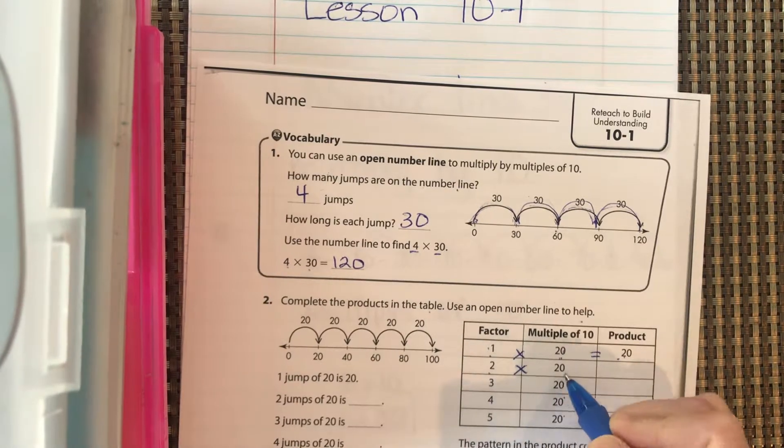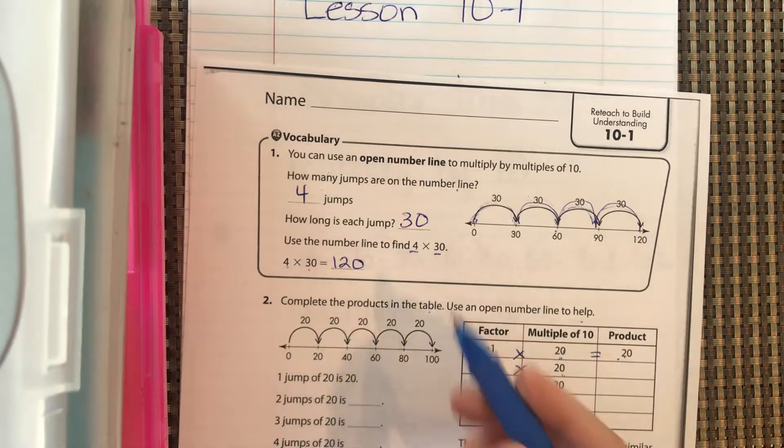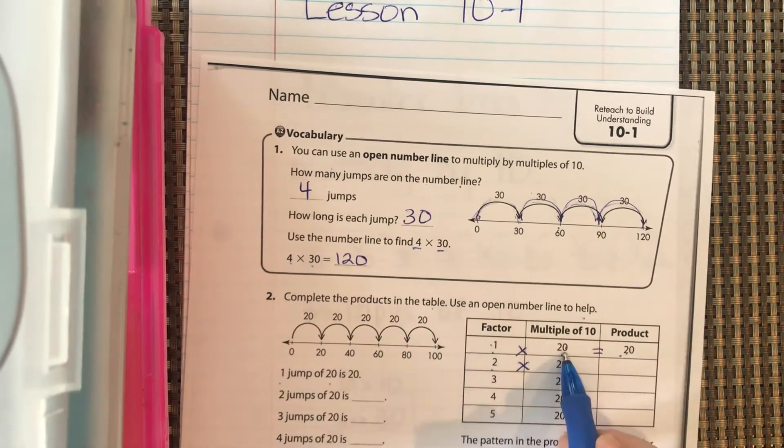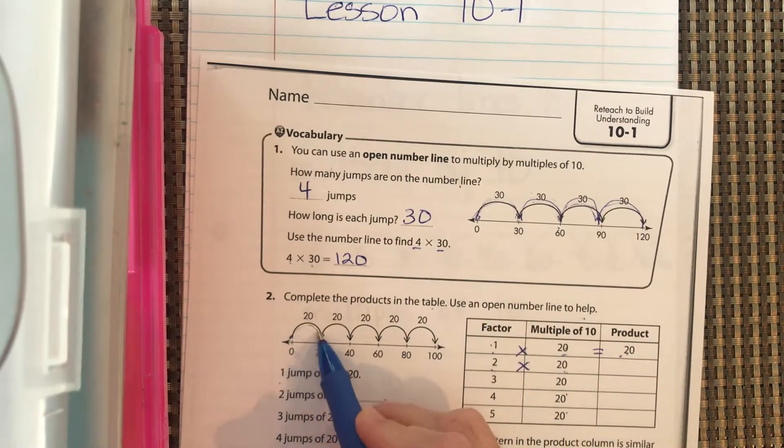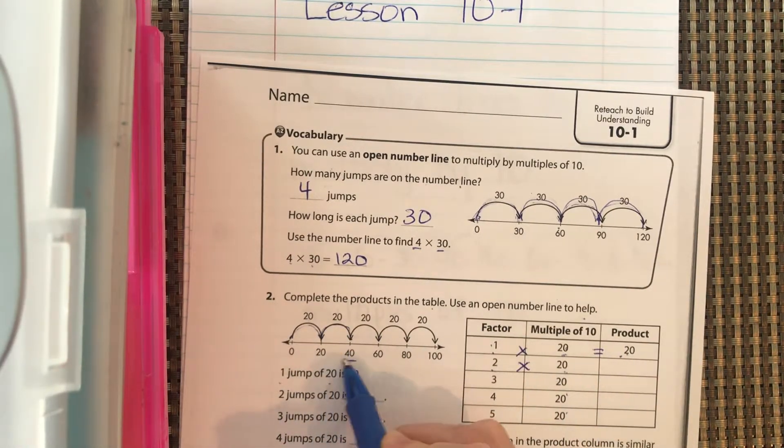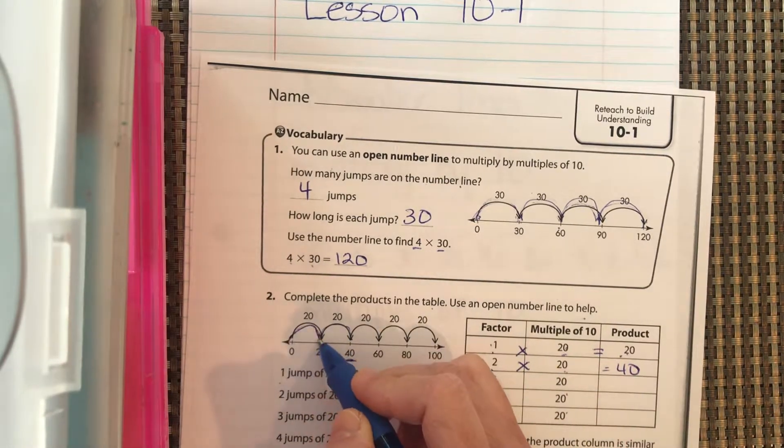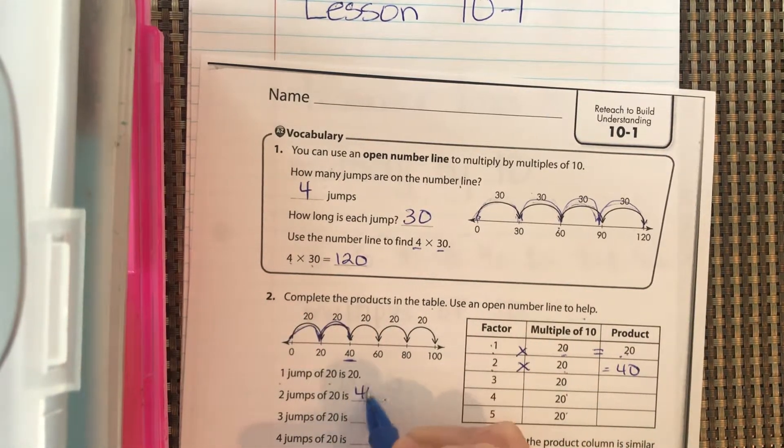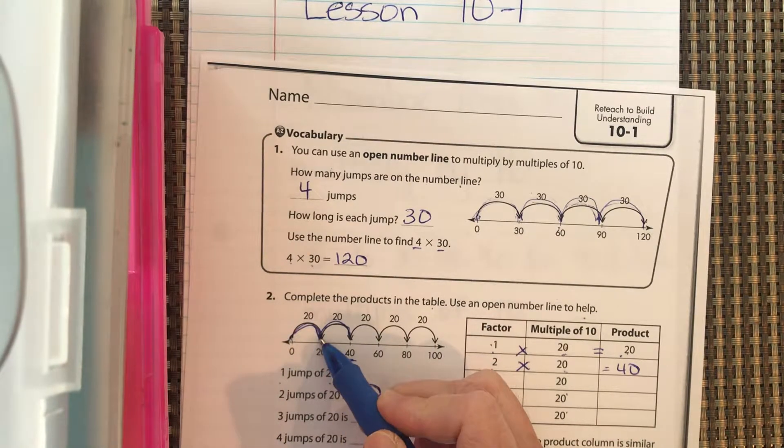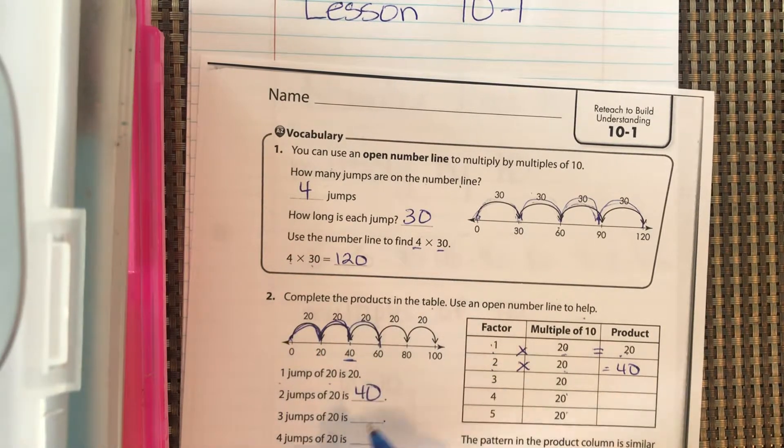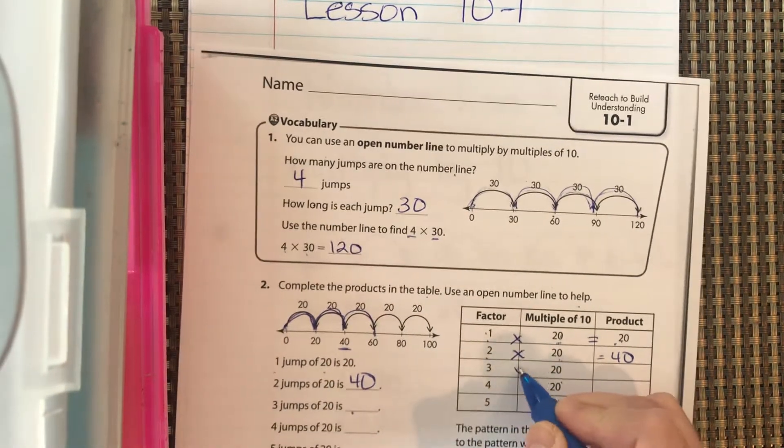So 2 times 20, well, let's count on the number line. So 1 jump of 20 is 20. 2 jumps of 20 is 40, right? 20, 40.